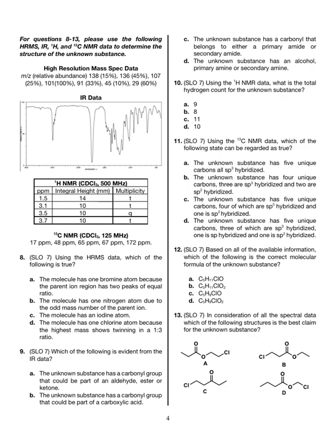Moving on to questions 8 through 13 regarding the following spectral data. You're given high resolution mass spec data, IR data, proton NMR data, and carbon-13 NMR data. Question 8: using the HRMS data, the highest mass is the parent and we see two peaks with a ratio of 1 to 3 — that tells us a chlorine atom is present. The correct answer for question 8 is D.